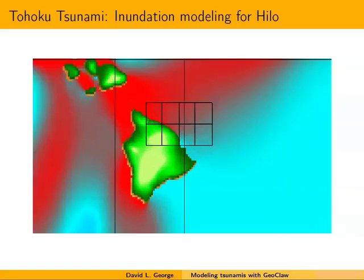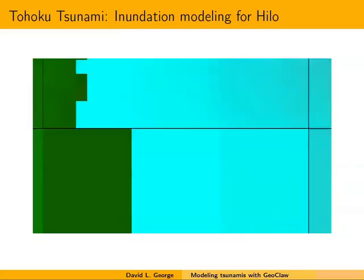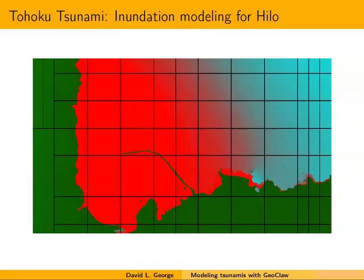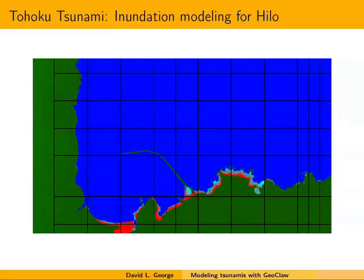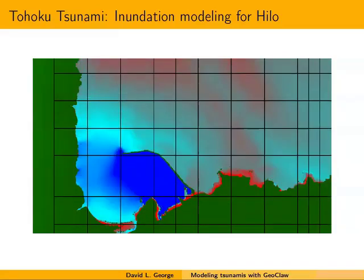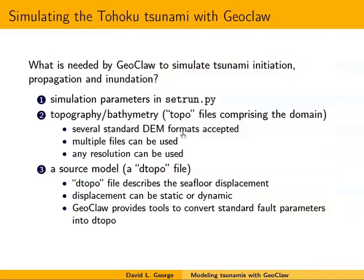These are the third, fourth, and fifth level grids. Notice the seawall seems to help at first, but later it almost does more harm than good because things resonate inside the harbor. I'll walk you through essentially all that needs to be done to set up that simulation.